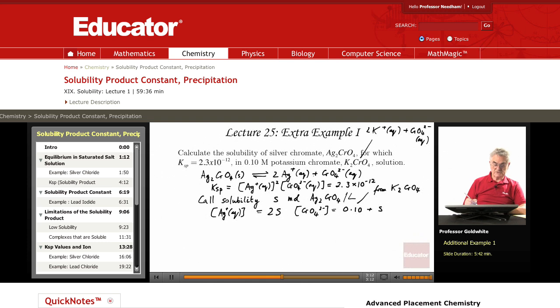Let's plug those into the Ksp expression. The silver ion is 2S, which is squared. The chromate is 0.10 plus S, and the product of those is Ksp, which equals 2.3 times 10 to the negative 12.